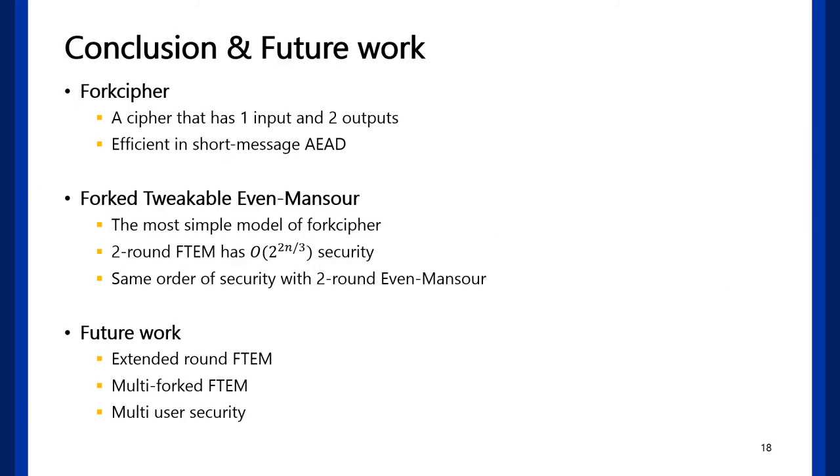This is our summary. Forkcipher is a cipher that has one input and two outputs, and efficient in short-message AEAD. And forked tweakable even-Mansour, the most simple model of forkcipher, has two-thirds of n-bit security, same order with two-round even-Mansour. And there are some natural ways to expand our results: extend the fork round or multi-fork and multi-user security.